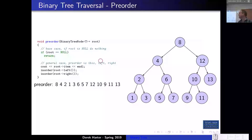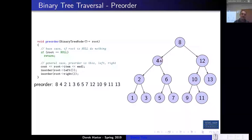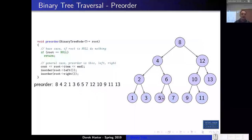You can also do a pre-order or a post-order traversal — these can be useful for different use cases. For pre-order, you first output the item you're visiting and then visit left then right. Starting from the root, you'd output 8, then visit the left tree, output 4, visit its left, output 2, then output 1. Then you'd visit the right of 1, which is three. Then you'd get 6 followed by 5 followed by 7. Then back to the right side: 12, then 10, 9, 11, and 13.